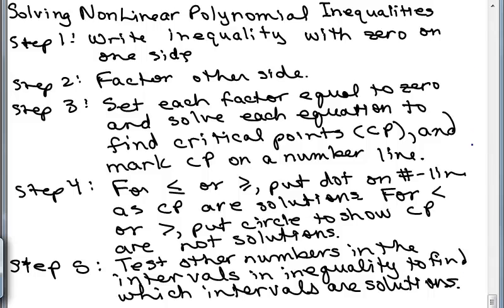These are the steps we took on the last video. First, we wrote the inequality with 0 on one side. Then we factored the other side. We set each factor to 0 and solved each equation to find critical points. Then we mark those critical points on a number line. If the inequality has less than or equal or greater than or equal, we put a dot on the number line because those are actual solutions. But if it's strictly less than or greater than, we put a circle to show those are not solutions. Then we test the intervals with other numbers to find the rest of the solutions.